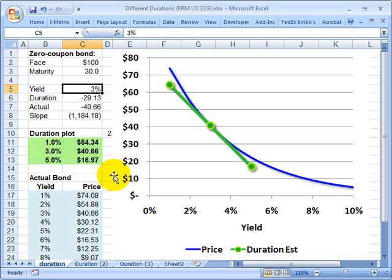So that's a brief introduction to duration for a zero coupon bond. This is David Harper of the Bionic Turtle. Thank you for your time.